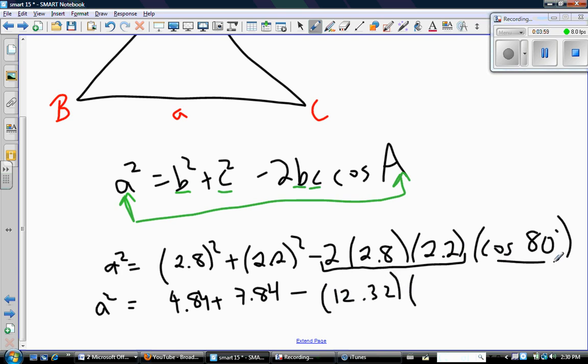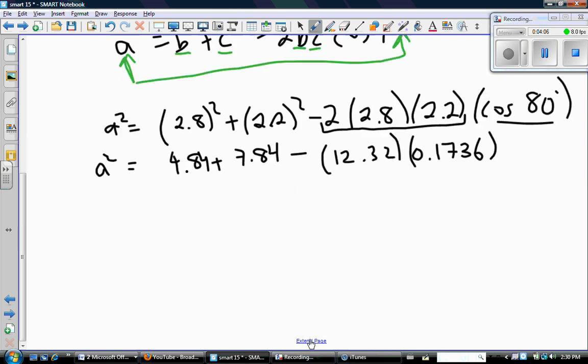And I'm going to calculate cosine 80. Again, make sure you're in the proper mode in your calculator. Nothing is worse than doing a question correctly except for your calculator messed you up. So now what do I have? So 4.84 plus 7.84, that's 12.68, minus here I'm going to do multiplication 12.32 times 0.1736 is 2.14, so I'm rounding a little bit. So a squared is equal to 10.54, so square root both sides, I get a value of 3.3 meters when I've rounded correctly to the first decimal place. Good.